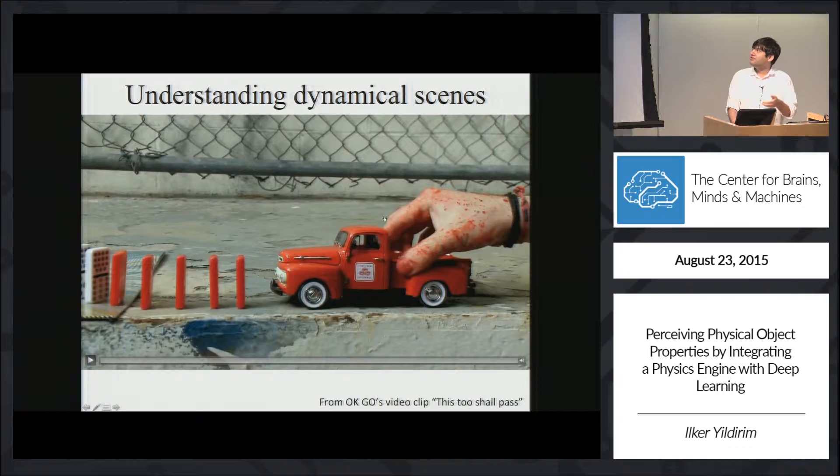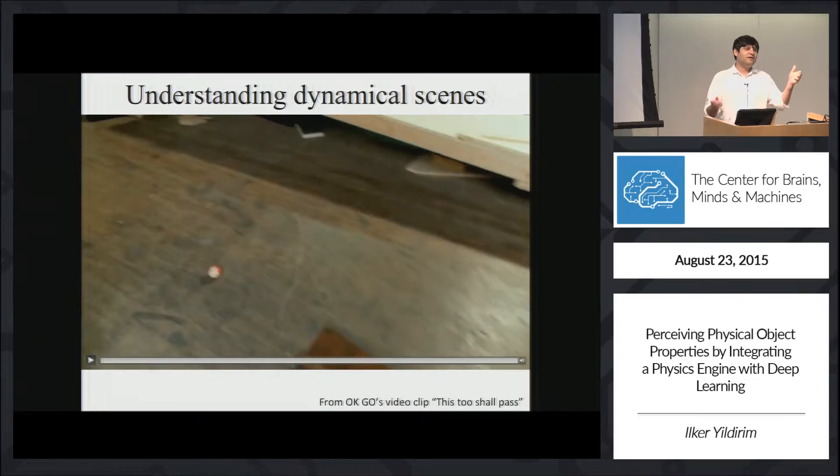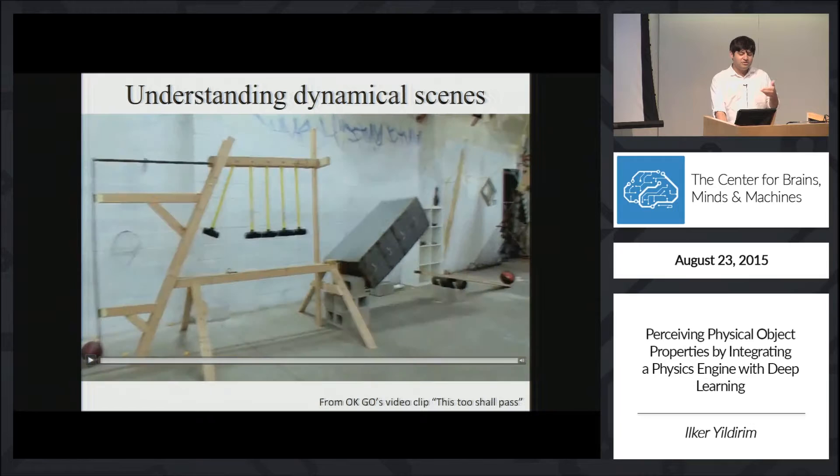The best way to relate what I mean by dynamical scenes is to show you a world-famous Rube Goldberg machine unfold, a small excerpt. So here things fall, collide each other, roll, many complex interactions, all of which we easily comprehend and understand.